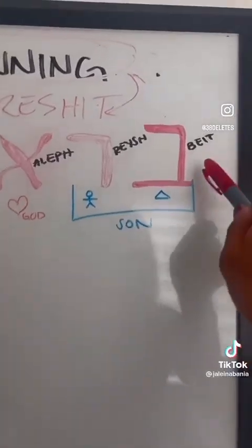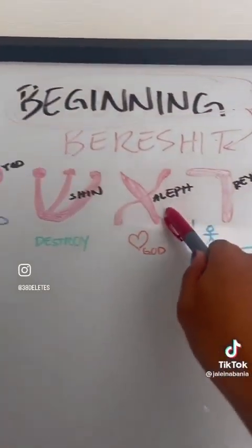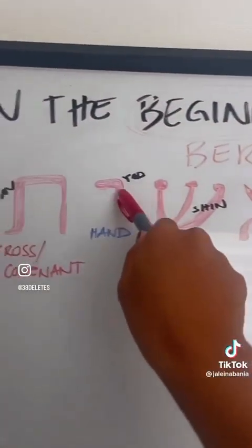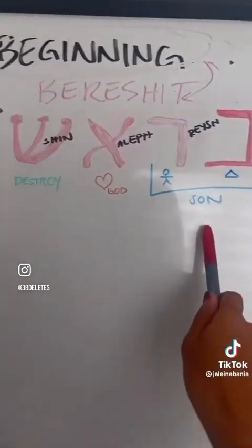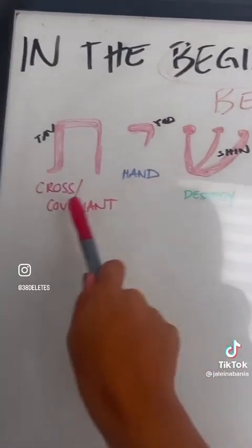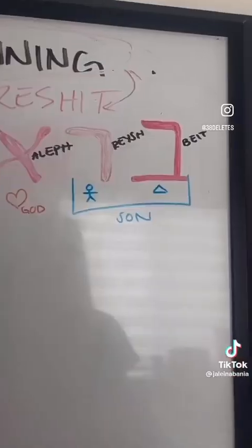To summarize: Beit, Resh, Aleph, Shin, Yod, Tav — spelled Bereshit, which means the beginning. And it's already forming a sentence: the Son of God destroyed by his own hand on the cross. But we're not done yet.